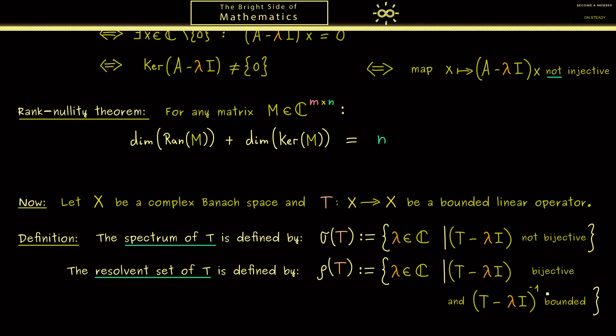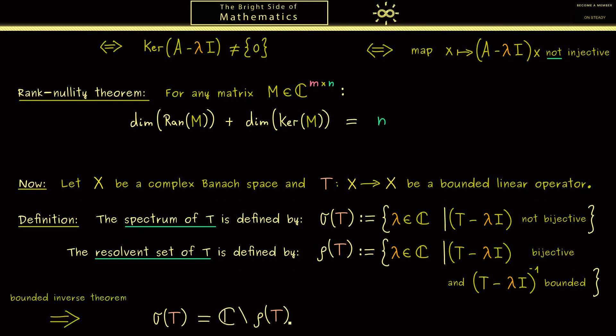Of course at this point you know a lot of functional analysis, and therefore you see we are working in a Banach space and therefore we can use the bounded inverse theorem. Which simply means when we have the bijectivity, this immediately follows. So we can just say σ is the complement set of ρ.